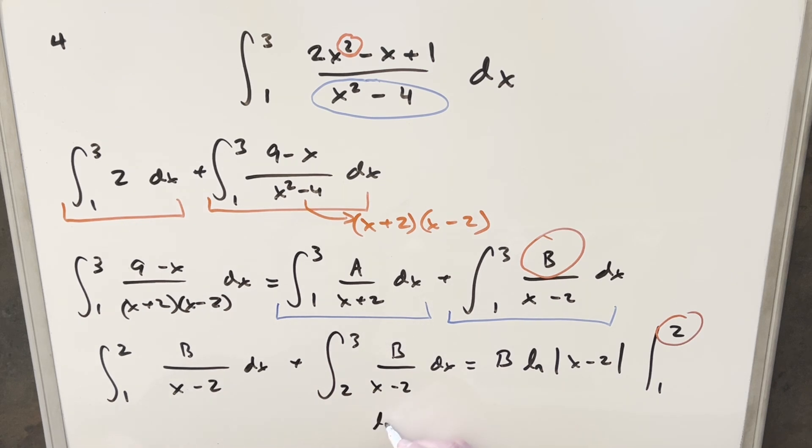So to evaluate this, we're going to need the limit as x approaches two from the negative side, from the less than two side of B natural log x minus two. And then for the other part for this, I'm just going to plug in.